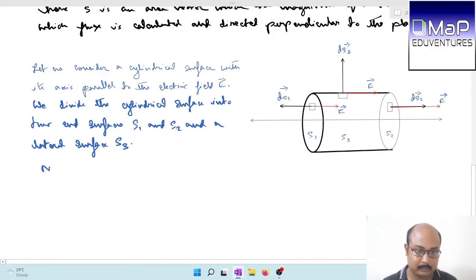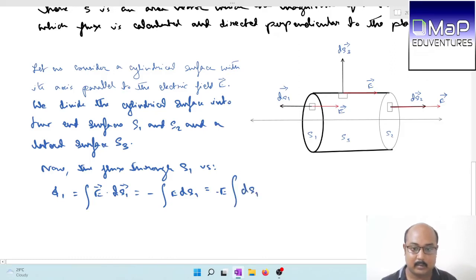The flux through S1, phi 1 equals integration E dot dS1. In the diagram, dS1 and E are anti-parallel vectors. E dot dS1 equals minus E dS1. Considering electric field intensity to be uniform over the surface, minus E times integration dS1 equals minus E S1, equation number 1.